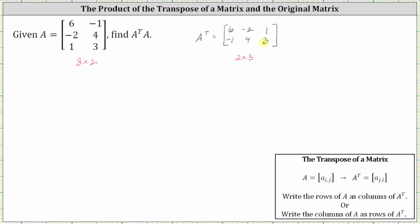Now that we have A transpose, we can determine A transpose times A. Remember, matrix multiplication is not commutative, meaning the order matters. So we begin with A transpose, which is a two by three matrix, and we multiply by matrix A, which is a three by two matrix.